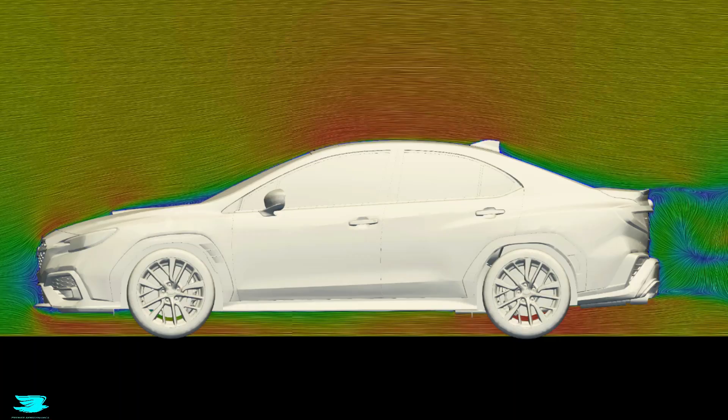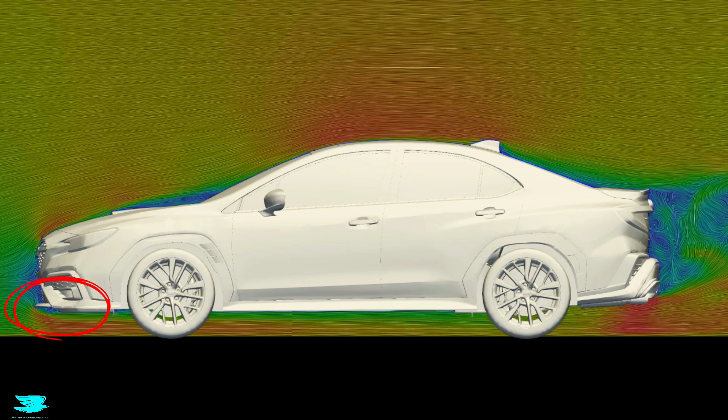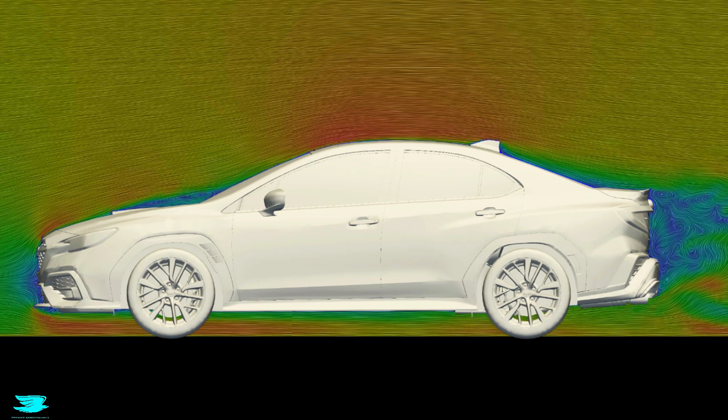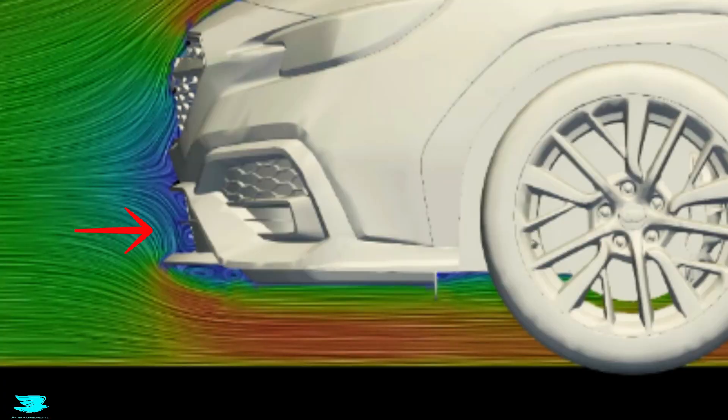Moving back to the centre plane, we also see another problem with the WRX. The front splitter. It definitely looks cool, but it could be designed better. Currently the flow comes along, tries to wrap around it so that it can go underneath the car, but then it separates. That creates a lot of drag.